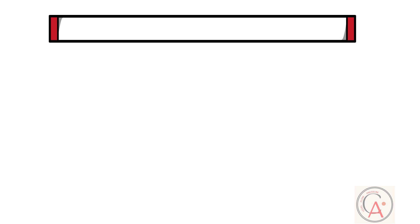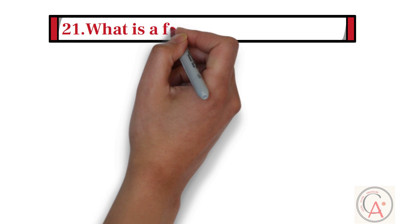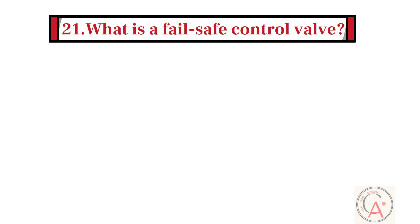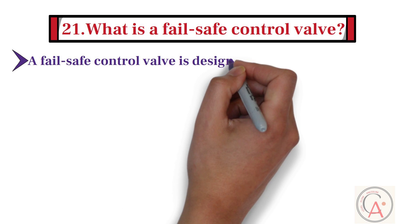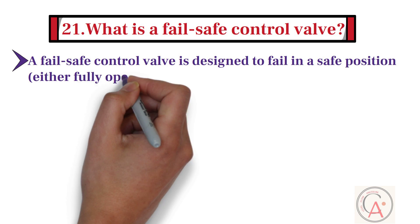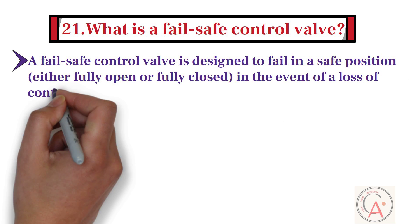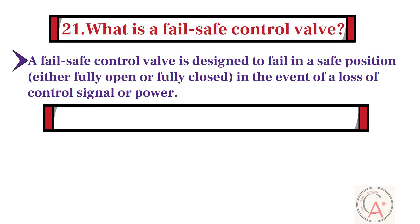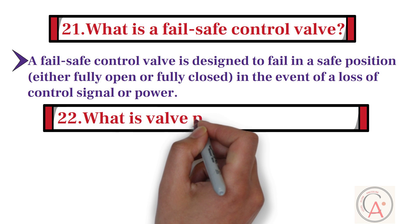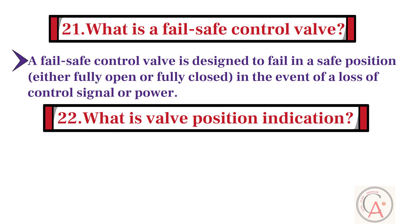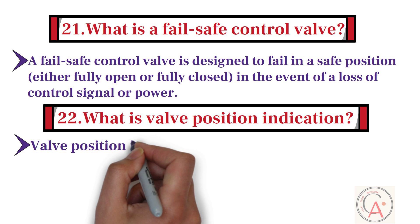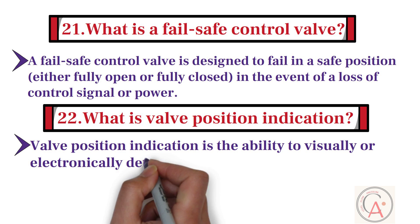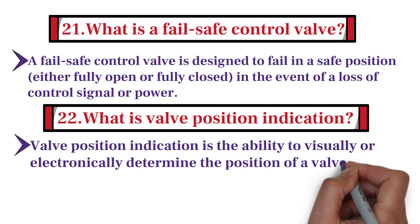Second to last question: what is a fail-safe control valve? A fail-safe control valve is a valve designed to automatically return to a safe position — such as fully open or fully closed — in the event of a power failure or other malfunction. Last question: what is valve position indication? Valve position indication is the ability to visually or electronically determine the position of a valve, which is important for monitoring and troubleshooting.